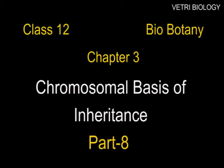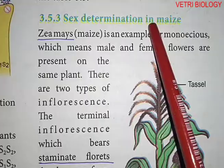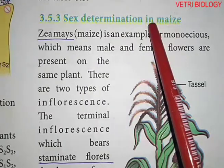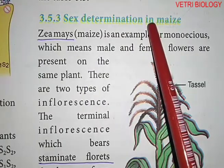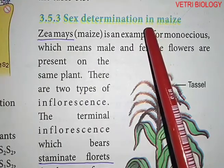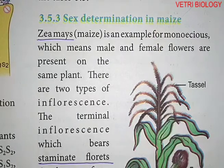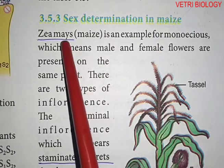Dear children, in the previous class we learnt about multiple alleles. Now let us learn about sex determination in maize. In this topic we are going to know how male and female sex is determined in maize.